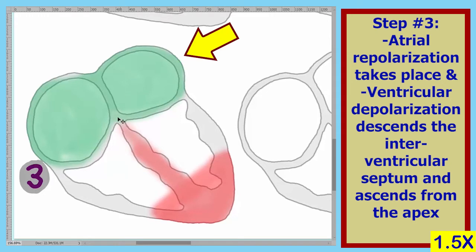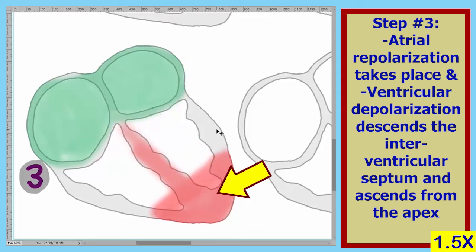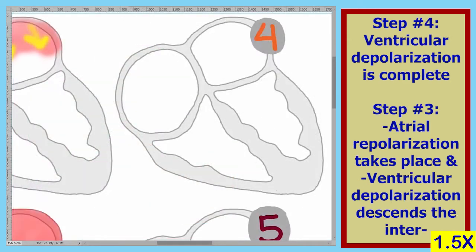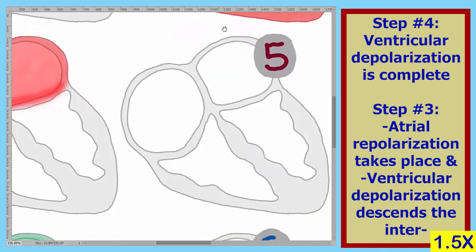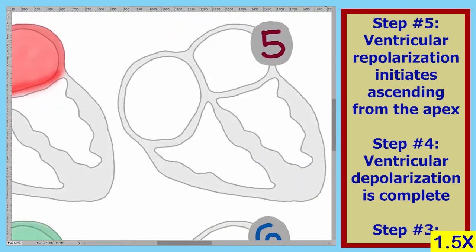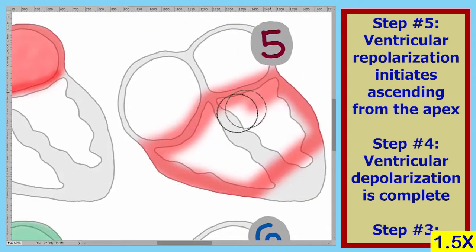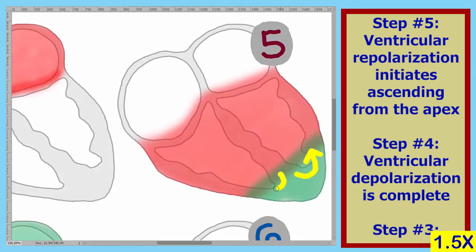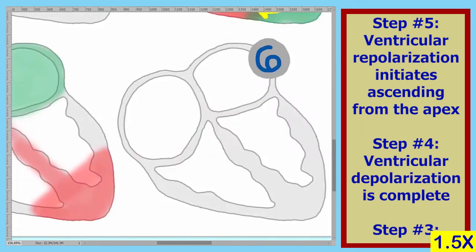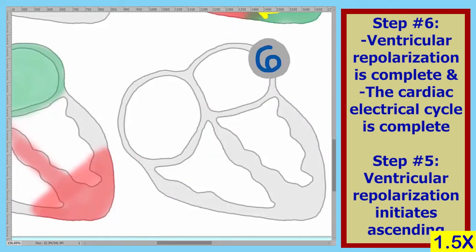Here is atrial repolarization, and moving down the interventricular septum towards the apex and moving up the outside of the heart is ventricular depolarization. In step four, we have full ventricular depolarization. In step five, ventricular repolarization moves upward from the apex. In step six, both ventricles are fully repolarized and the cycle is complete.